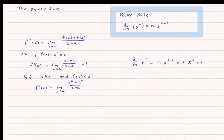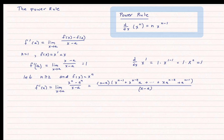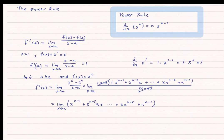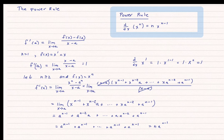Now let's say n is greater than or equal to 2, and f(x) equals x to the n power. We can say f prime of a equals the limit as x approaches a of x to the n minus a to the n, divided by x minus a. There is a factoring rule that lets us factor x to the n minus a to the n. Once factored, the x minus a divides out of the numerator and denominator. I can then directly substitute x as a since this is a polynomial. Multiplying out, I get exactly n terms of a to the n minus 1, giving n times a to the n minus 1. Making this a function, f prime of x equals n times x to the n minus 1 — which is the power rule.